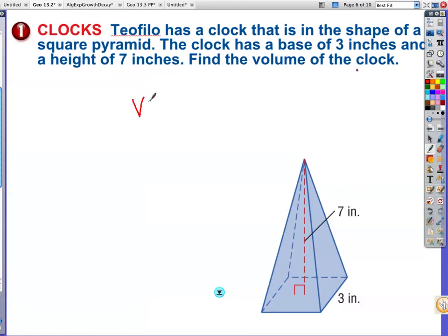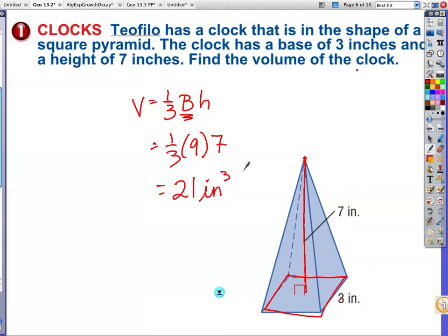We're going to use the volume formula: one-third base times height. Remember this is the area of the base. So I'm going to use one-third my area of my base, that's a square, so I have to take 3 times 3 which gives me 9, and the height is not a slant height, it's a height from the top to the bottom which is just 7. So this is actually 3 times 7 which is 21, and when we're talking about volume we will be doing inches cubed.